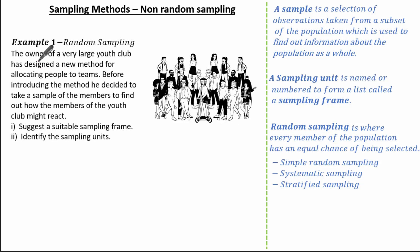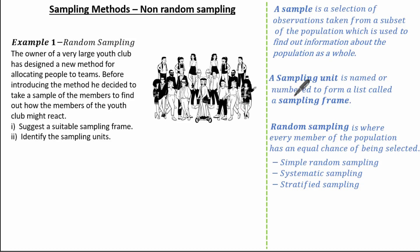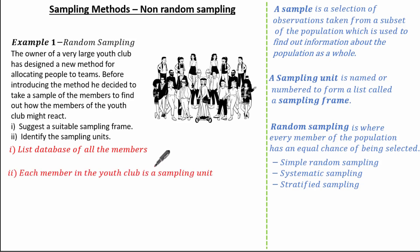Here the question states that the owner of a very large youth club has designed a new method for allocating people into teams. Before introducing the method, he decided to take a sample of the members to find out how they might react. We need to suggest a suitable sampling frame and identify the sampling units. The sampling frame is a list of ordered or named sampling units, so a database of all the members would be our sampling frame, whereby each sampling unit would be each member in the youth club.